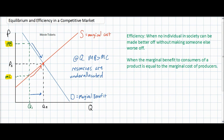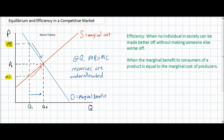Thus, QE is the most efficient quantity of movie tickets. Another way to analyze the inefficiency at a quantity of Q1 is to examine the effects it has on consumer and producer surplus.